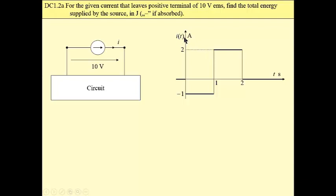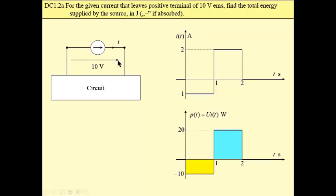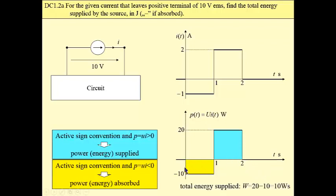We multiply the current by the DC voltage to obtain instantaneous power. This element satisfies the active sign convention, which means that a negative field is energy absorbed and a positive field is energy supplied. Adding them together, minus 10 plus 20 gives 10 joules, which is the total energy supplied by this voltage source.